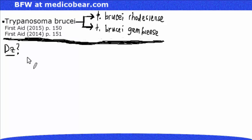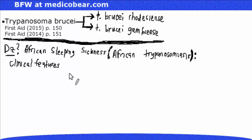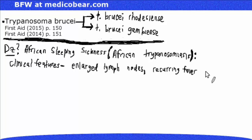The type of disease this causes is African sleeping sickness, also known as African trypanosomiasis. Clinical features to look for in the vignette and question stem are enlarged lymph nodes and recurring fever, also referred to as relapsing fever. It is important and high yield to know that the recurring fever is due to antigenic variation — this is a testable point.